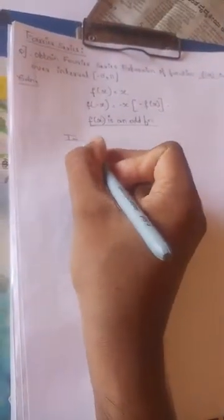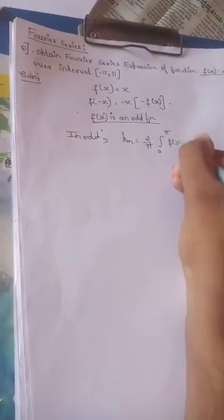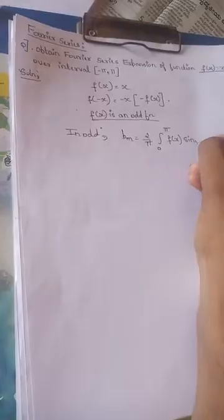Whenever f(x) is an odd function, the Fourier coefficients are: a0 equals 0 and an equals 0. For bn, the formula goes: bn equals 2 over pi, integration from 0 to pi of f(x) sin(nx) dx.